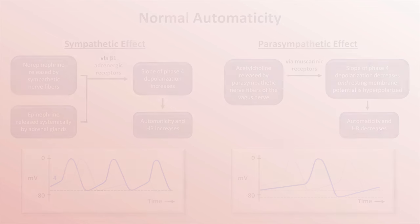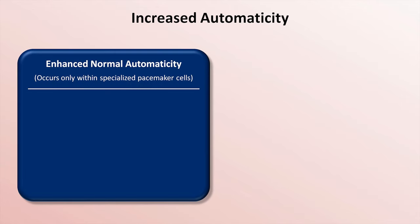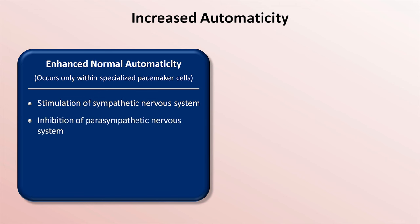So now that we understand normal automaticity, what causes increased automaticity? There are two types of increased automaticity. The first is called enhanced normal automaticity. This occurs only within specialized pacemaker cells and is the consequence of those cells doing what they are supposed to be doing in response to various stimuli. Examples of etiologies in this category are stimulation of the sympathetic nervous system, as you might see in sepsis, hypovolemia, exercise, fear, or most forms of pain. Inhibition of the parasympathetic nervous system can also do this, as can be caused by medications or disruption of the vagus nerve. ATP depletion from hypoxemia or ischemia can lead to enhanced normal automaticity, as can digoxin toxicity and hypokalemia.